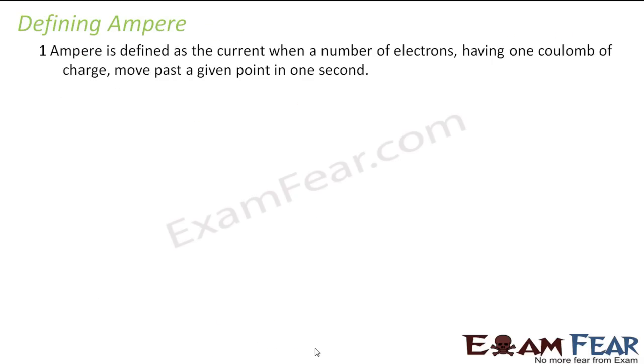Now how do I define 1 ampere? How do I define 1 ampere of current? As I mentioned from the definition of current, we define it as the rate of flow of electric charge. Current will be 1 ampere when 1 coulomb of charge flows in 1 second.